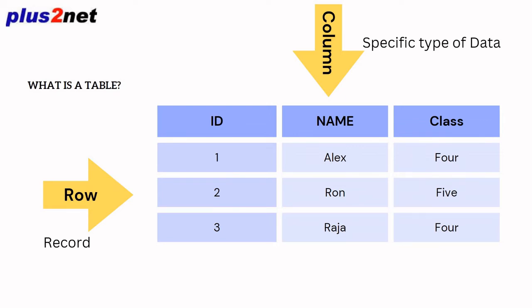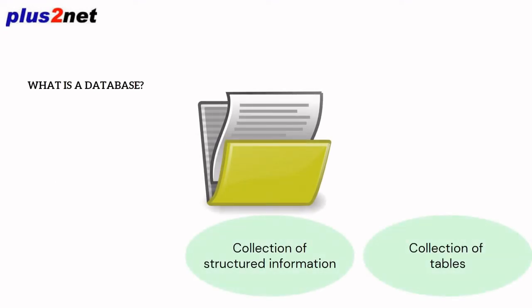Rows are identified when the combination of a record is given. A row will have an ID, name, class, mark, gender, phone number — everything combined — and we call it a row or a record. Now the question comes: what is a database? When we have such structured data gathered together across multiple tables, we call it a database, or in simple terms, a collection of tables.